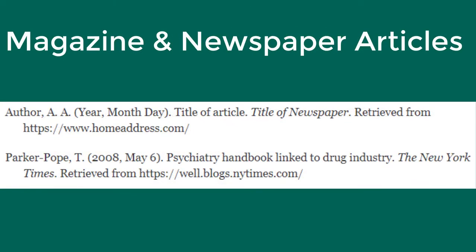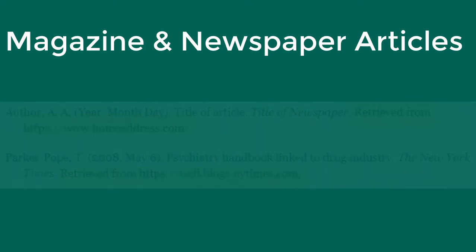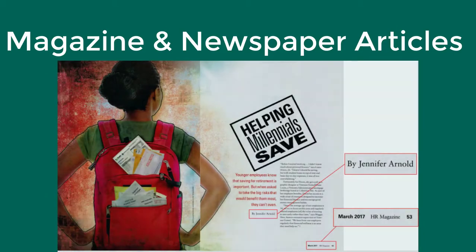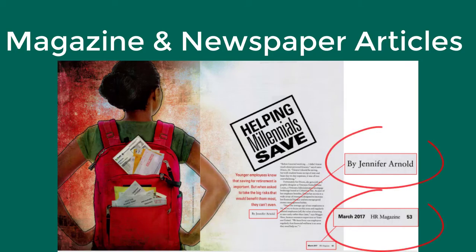Magazine and newspaper articles follow a similar format. They won't have a DOI listed, so you may include the words 'retrieved from' and a link to the homepage of the magazine or the newspaper. Like journal articles, citation information for magazine and newspaper articles might be found at the top or at the bottom of the page.